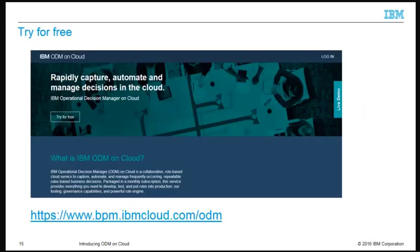IBM Operational Decision Manager on cloud is available from IBM Passport Advantage through a single monthly subscription that includes software, infrastructure, and management services, and delivers most of the capabilities of the ODM standard on-premise version. You can try ODM on cloud for free — use the URL on the slide to sign up and try it out. To learn more about ODM on cloud, please visit the IBM Knowledge Center. Thanks for watching.